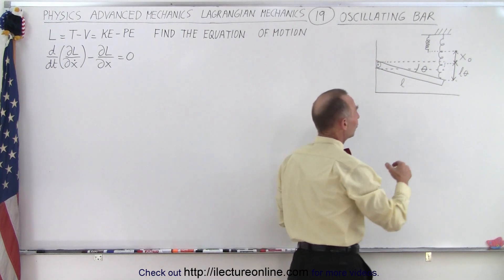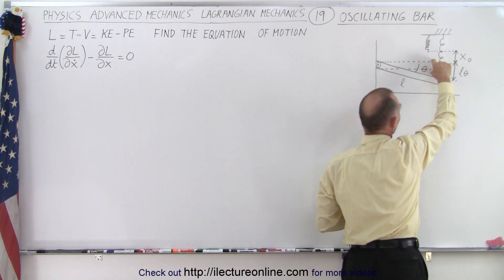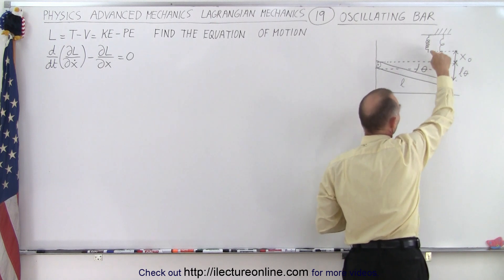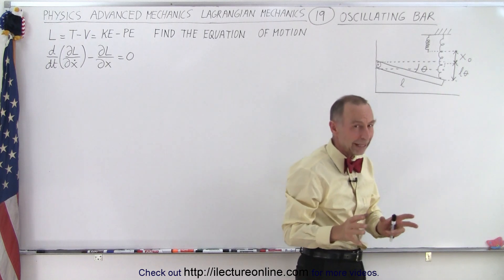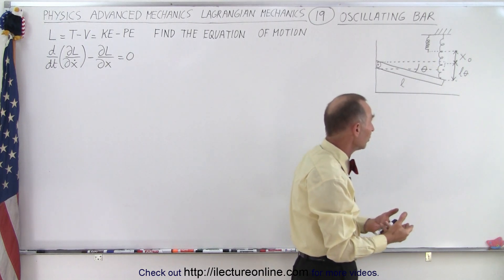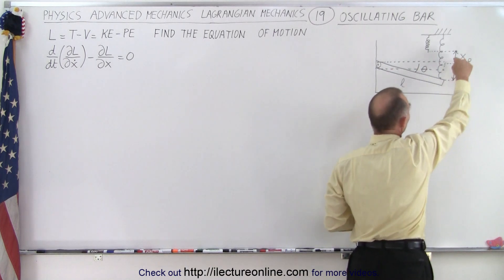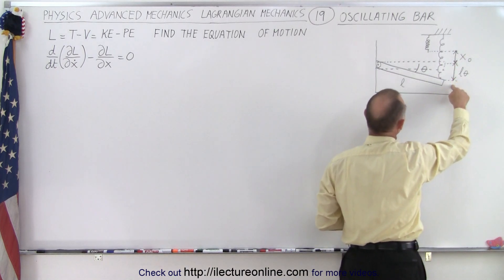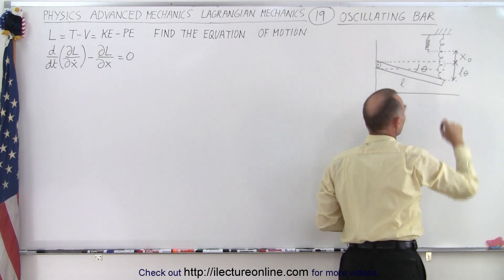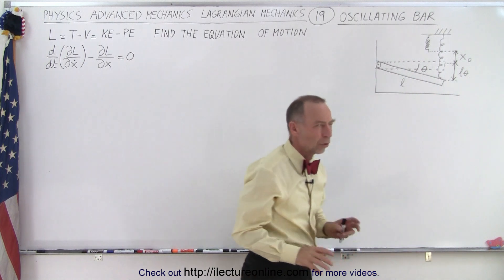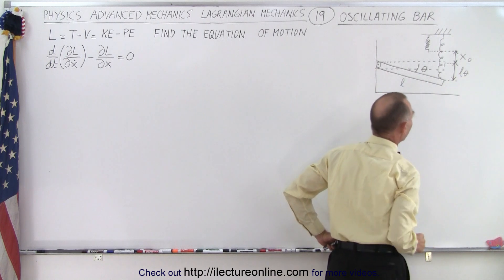Let's call x_naught the distance from where the unstretched spring reaches to where the bar is horizontal — that extra extension when the spring is pulled down to the bar's equilibrium position. That is a constant value, not a variable. The additional distance the spring is elongated beyond that is given by l times theta, where l is the length of the bar. So the variable we're working with is theta.